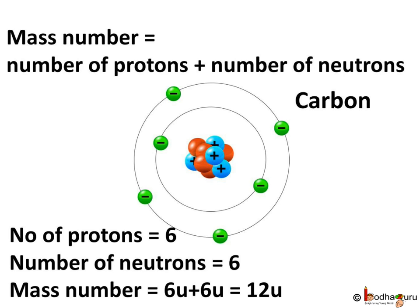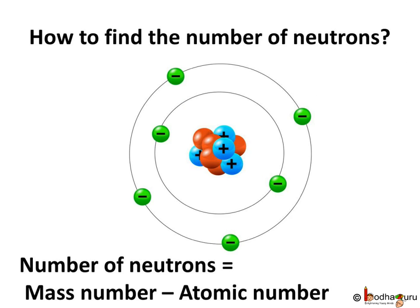Now, if you are given the mass number and the atomic number, how do you find the number of neutrons? The number of neutrons is equal to the mass number minus the atomic number. This is because the mass number is the sum of protons and neutrons, and the atomic number is equal to the number of protons in an atom.